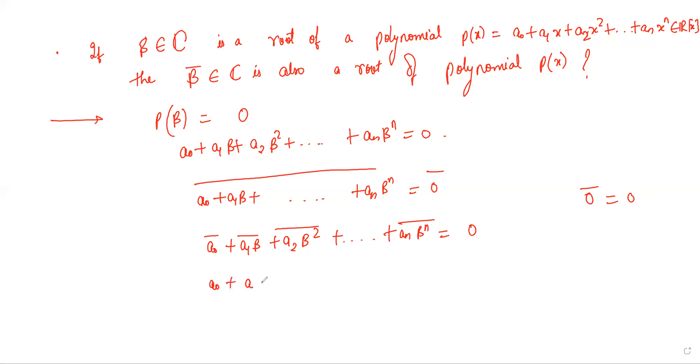Plus a_1 beta bar plus a_2 beta bar squared plus so on after a_n beta bar power n.